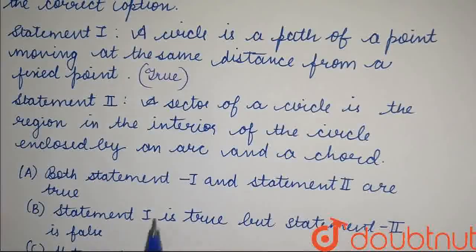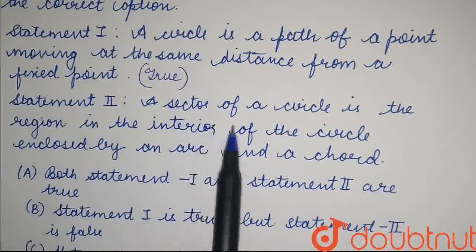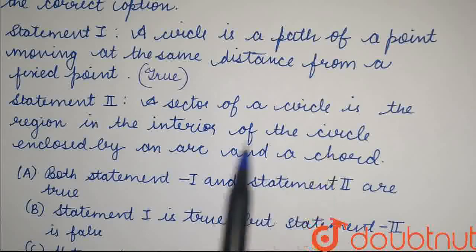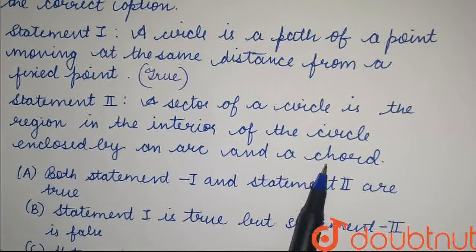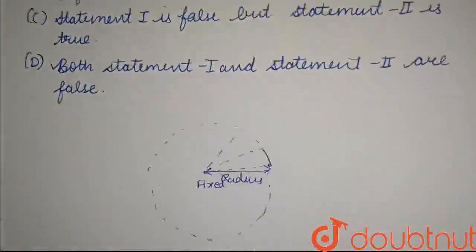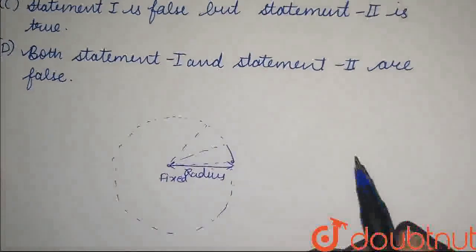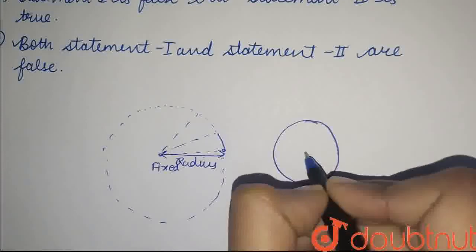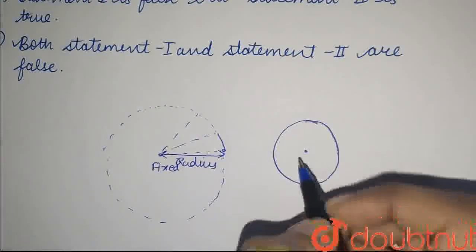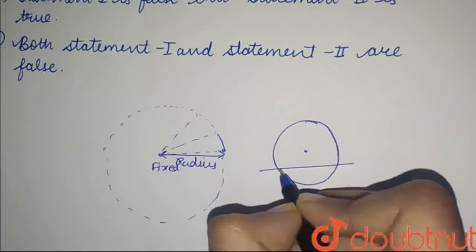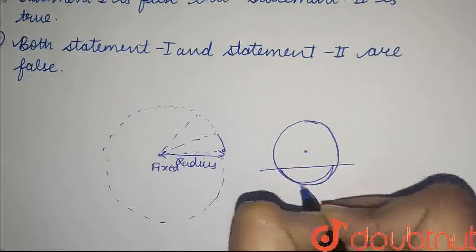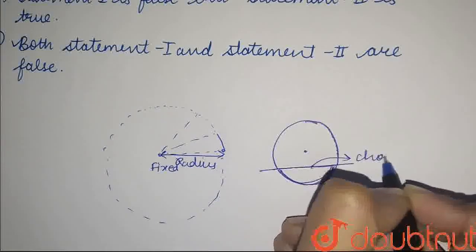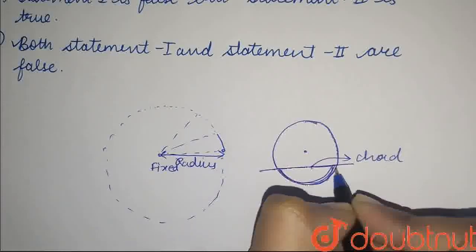So now let's talk about the second statement. What is the second statement? A sector of a circle is the region in the interior of the circle enclosed by an arc and a chord. So what are you saying? One has a chord and the arc, right?